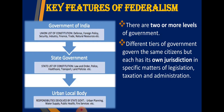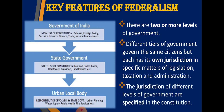Different levels of government rule the same citizens, but they have their own area of work, their own jurisdiction. They decide on specific matters of making new laws - that is legislation - what taxes to implement, and how to manage law and order and administration. The jurisdiction of different levels of government are specified in the constitution. So the first three features are: two or more levels of government, each government having its own jurisdiction, and all those jurisdictions and separation of powers being mentioned in the constitution.